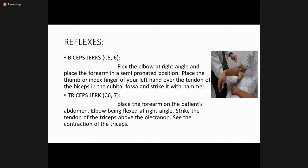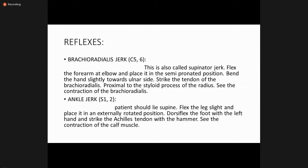For the triceps reflex, place the forearm on the patient's abdomen with the elbow flexed at a right angle and strike the tendon of the triceps above the olecranon; observe the contraction of the triceps. For the brachioradialis — also called the supinator jerk — flex the forearm at the elbow in a semi-pronated position, bend the hand slightly towards the ulnar side, and strike the tendon of the brachioradialis proximal to the styloid process of the radius. For the ankle jerk, place the patient supine, flex and externally rotate the leg, dorsiflex the foot with the left hand, and strike the Achilles tendon with the hammer; observe the calf muscle contraction.